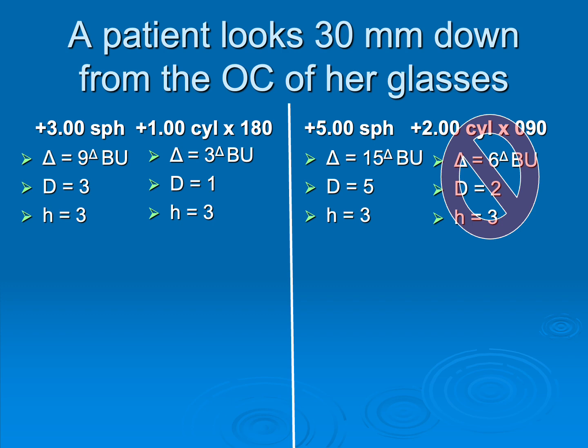All of the power in this plus two cylinder axis 90 is horizontal because once again, I know I'm beating a dead horse here, but these are things that were kind of hard for me as a resident to wrap my head around. The axis is a label. It has zero power. It's perpendicular to where the power of that cylinder is. So if I have an axis of 90, there's no power 90, no power vertically. All the power is horizontal.